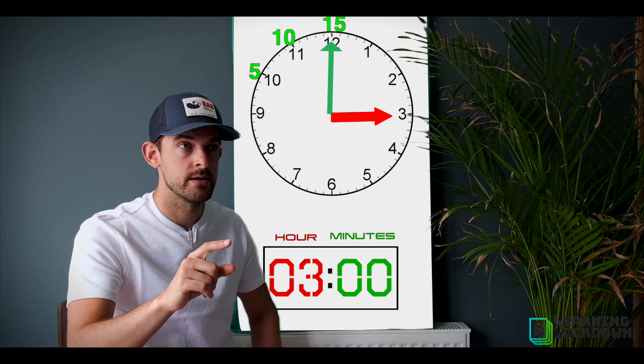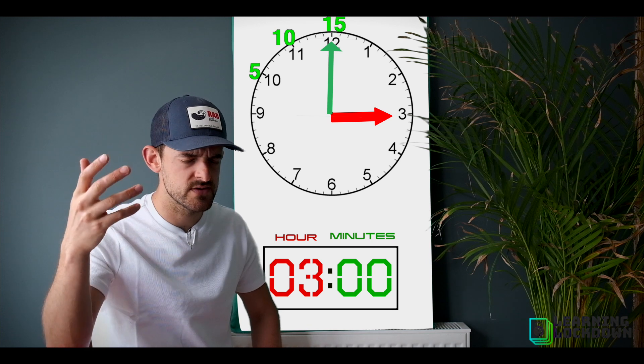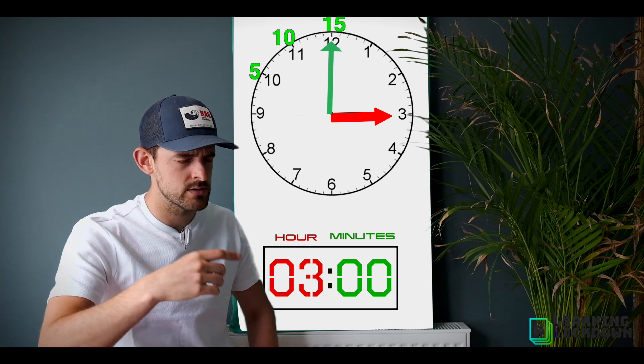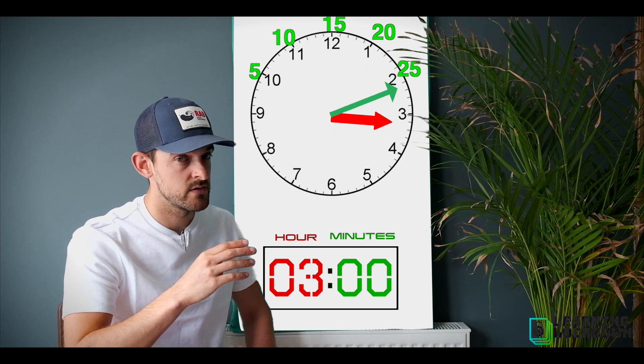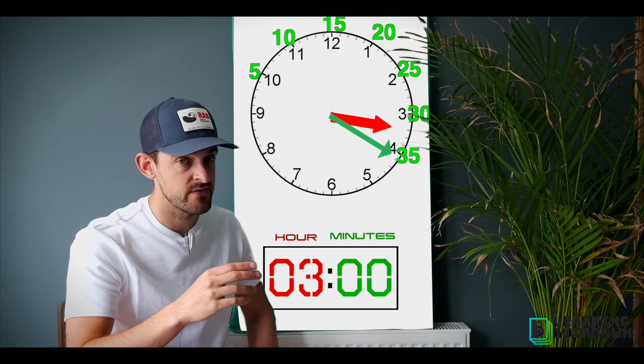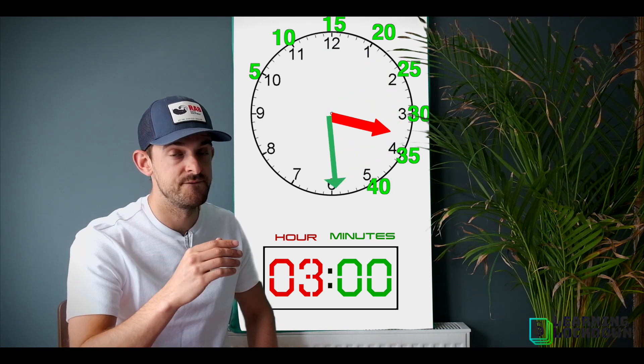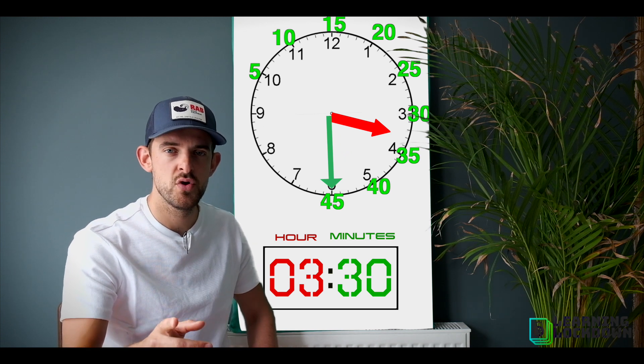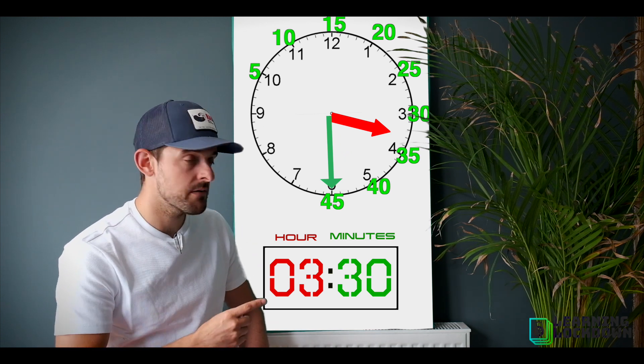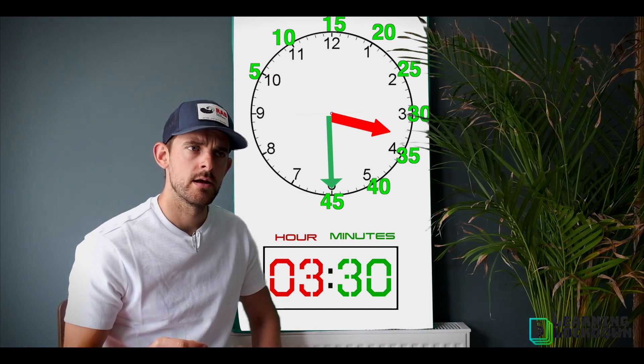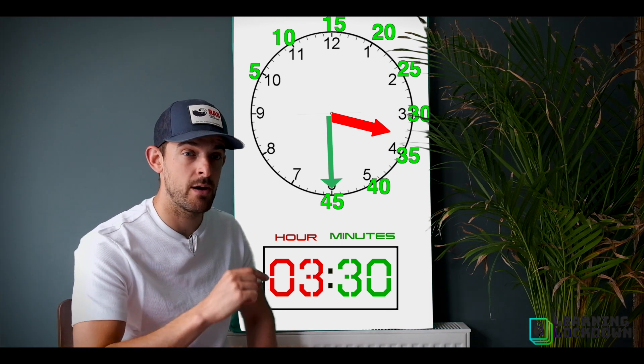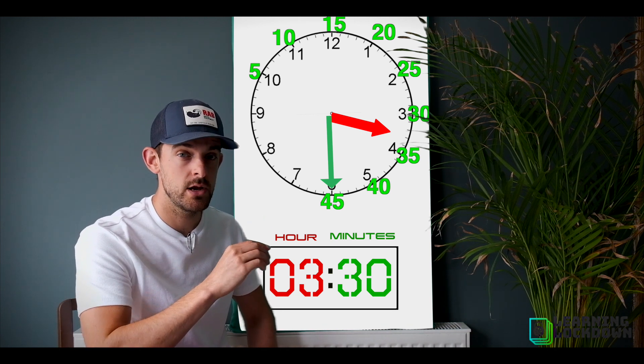I'm at 15: 20, 25, 30, 35, 40, 45. I've moved all my minutes, but you can see now that my minute hand is at the half past. Well, as long as I've moved that hour hand to three previously when I got to 12, I know now I'm further past three, so I'm half past three.